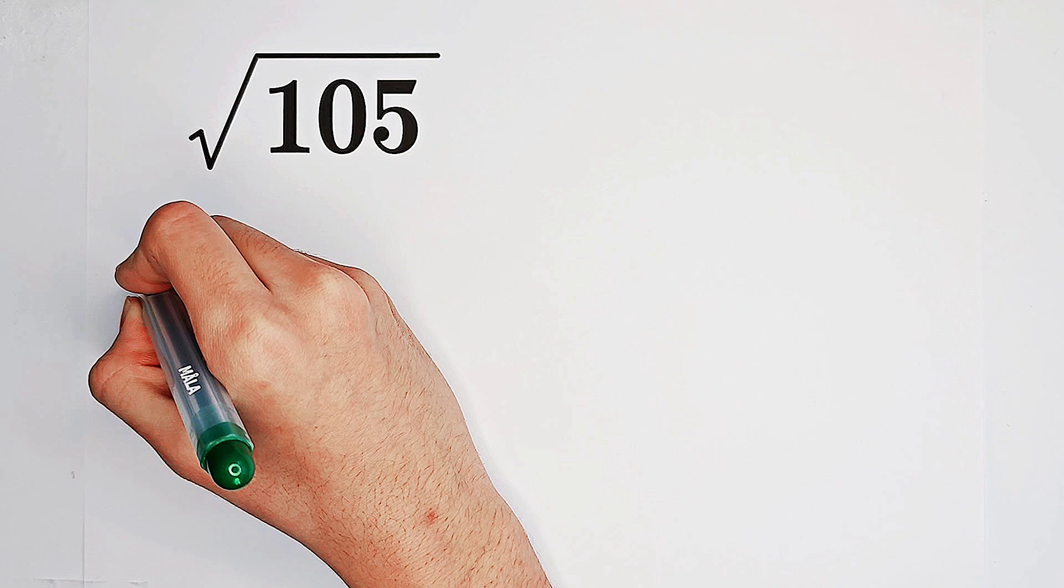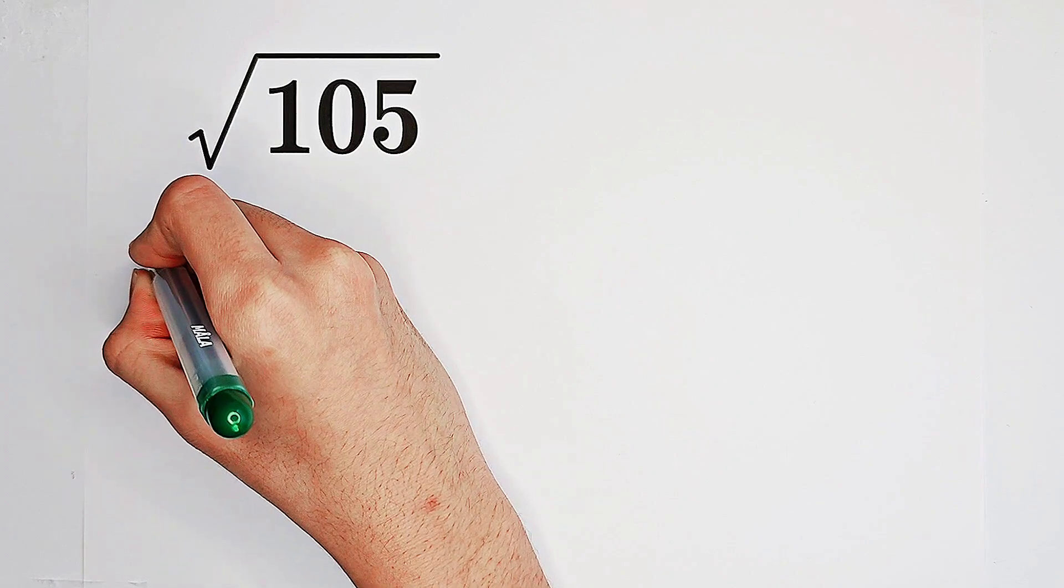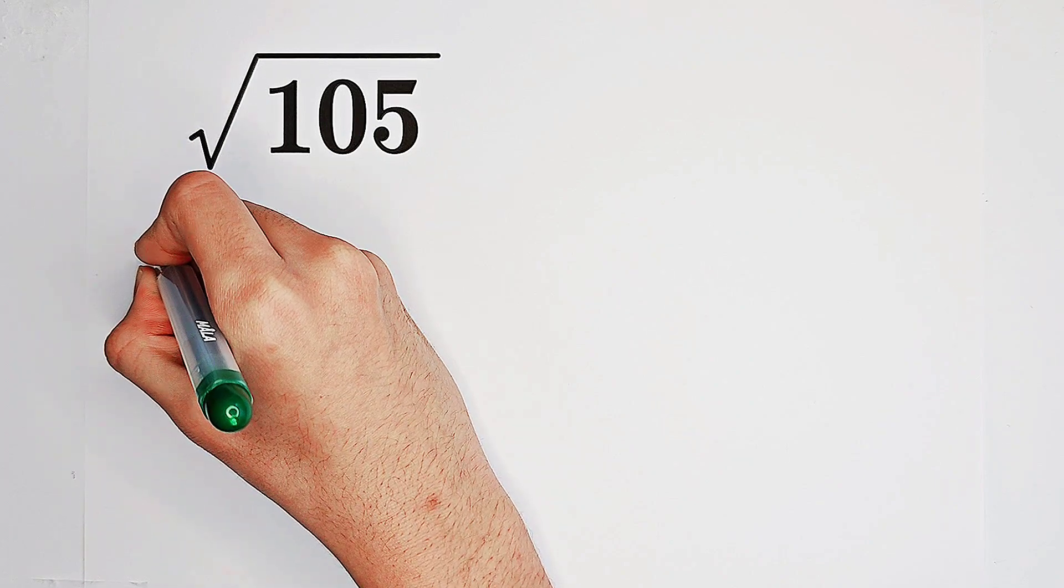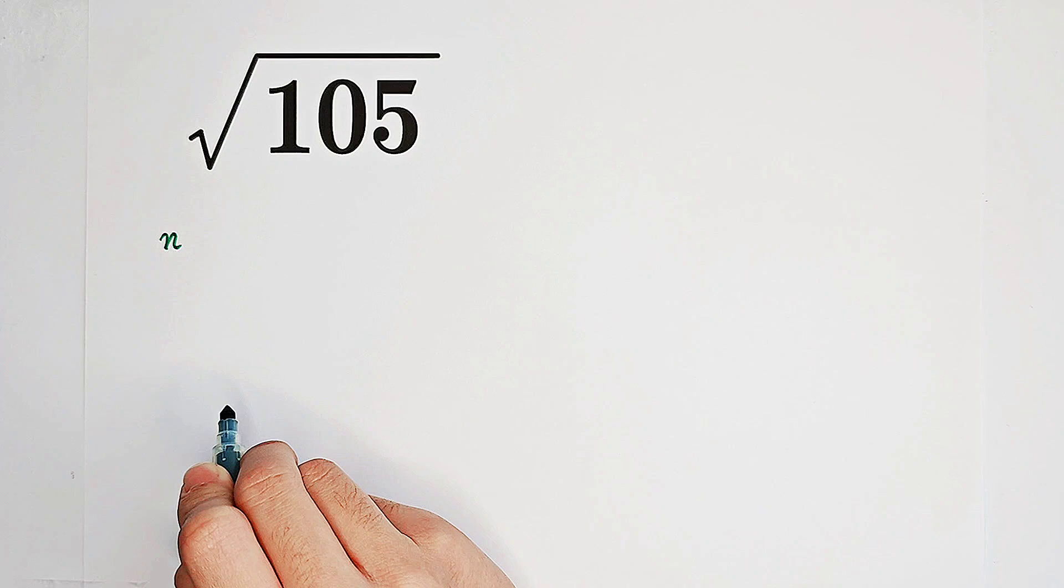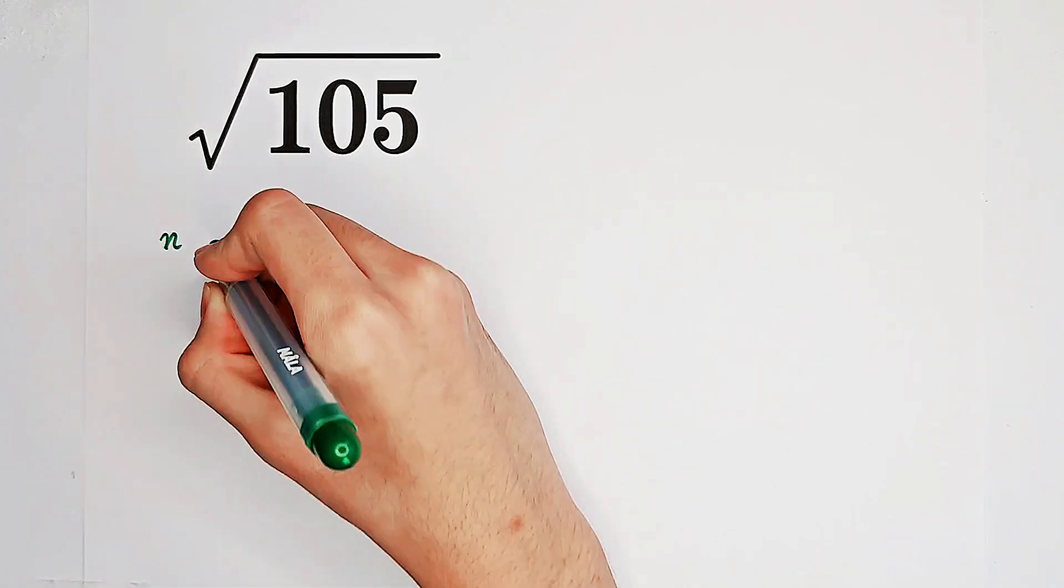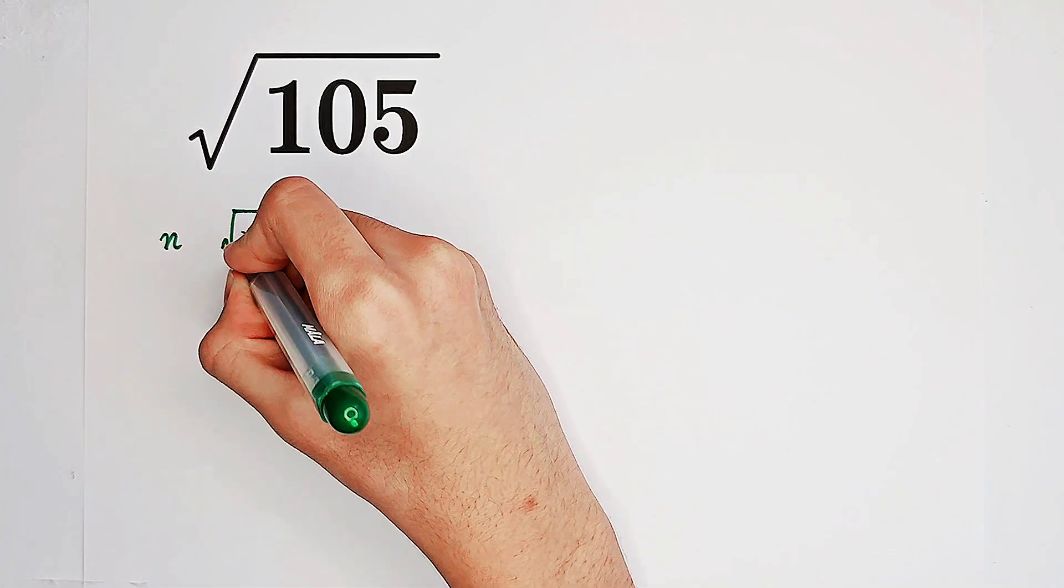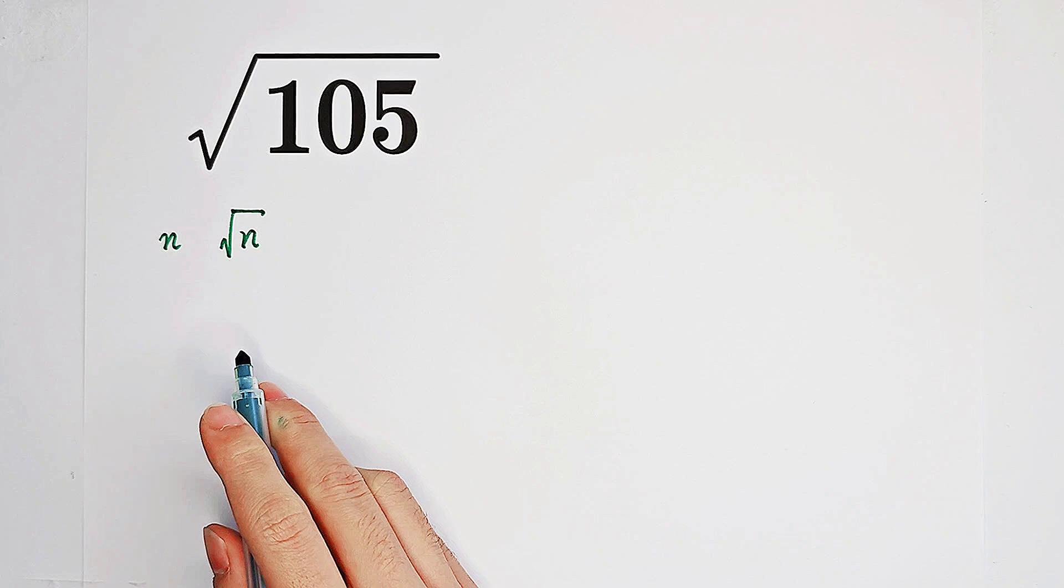For example, we have a number n and we want to approximate square root of n. n is a natural number.